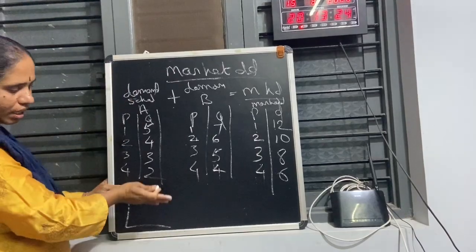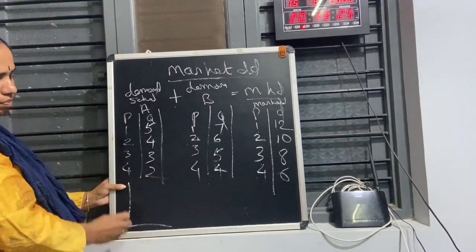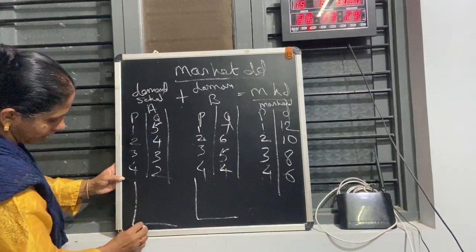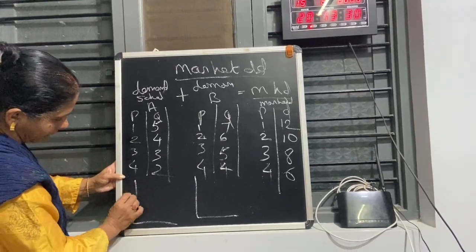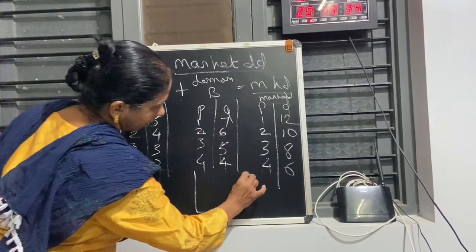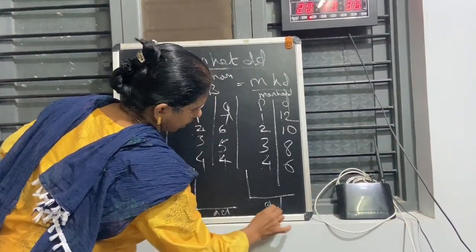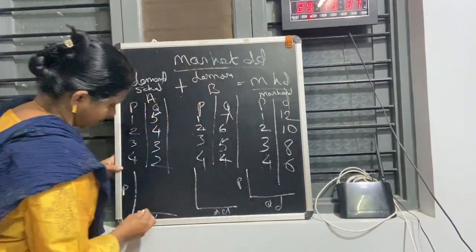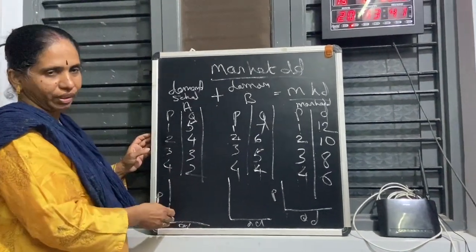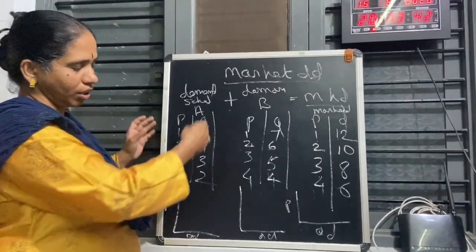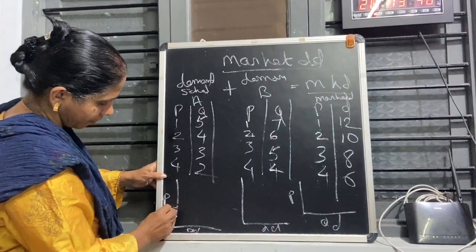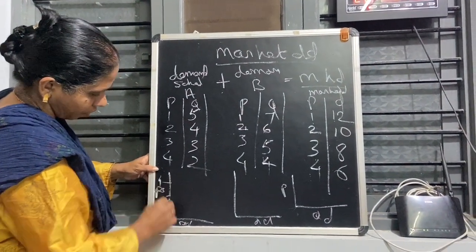This we have to represent in a table. So in the table, we write price in one column, then quantity demanded for consumer A, quantity demanded for consumer B, and then market demand quantity. Always take the least number because it is easy to draw the graph; otherwise you will find it difficult to draw. Price goes 1, 2, 3, 4 and we write a 0 on the axis.